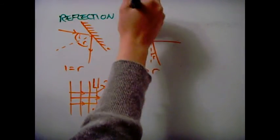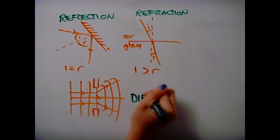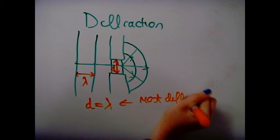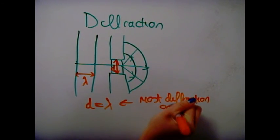All waves can be reflected, refracted and diffracted. Diffraction occurs the most when the size of the gap is closest to the wavelength.